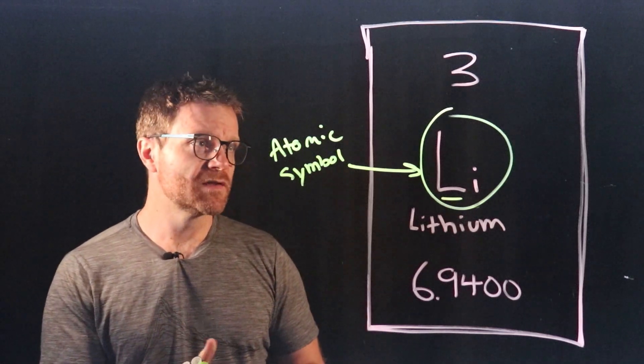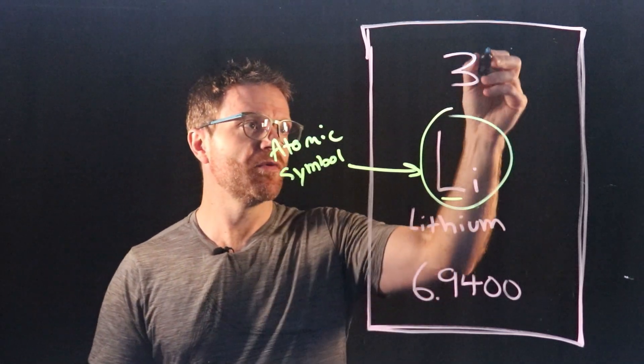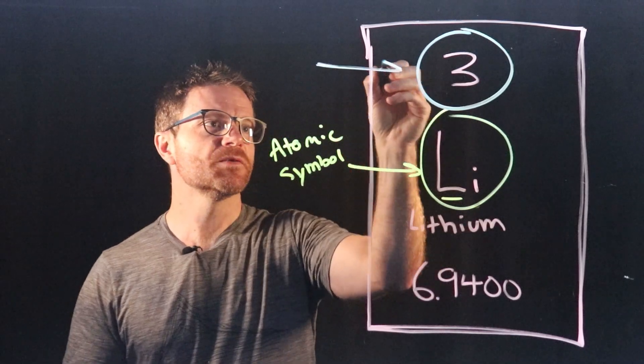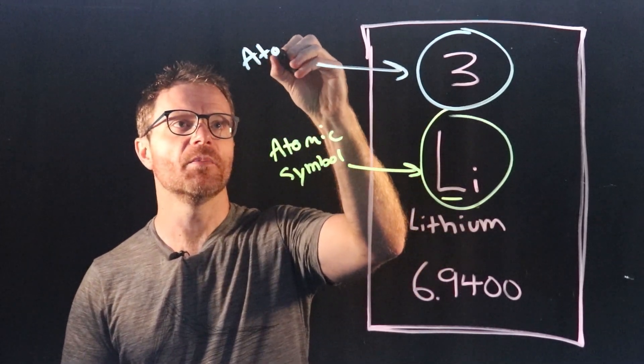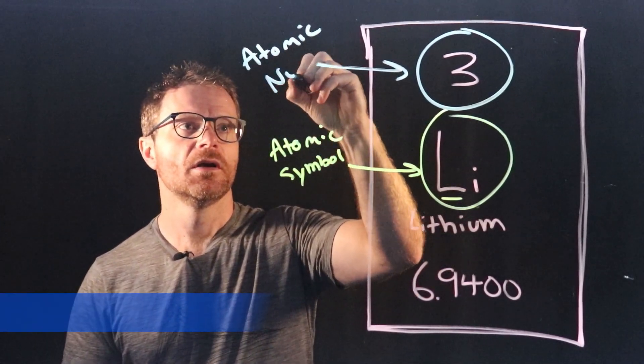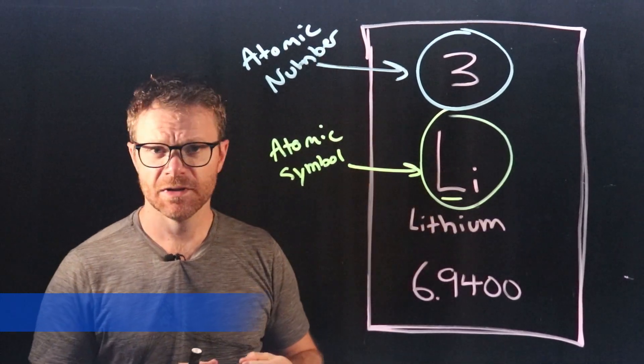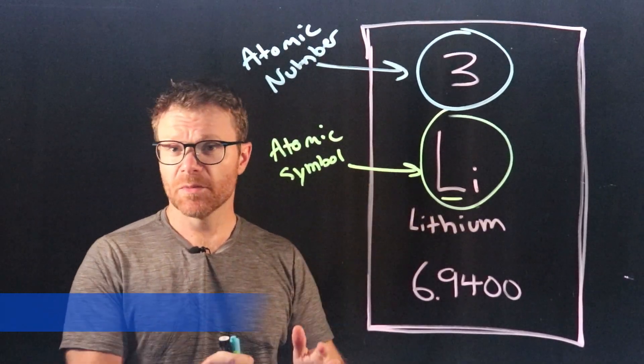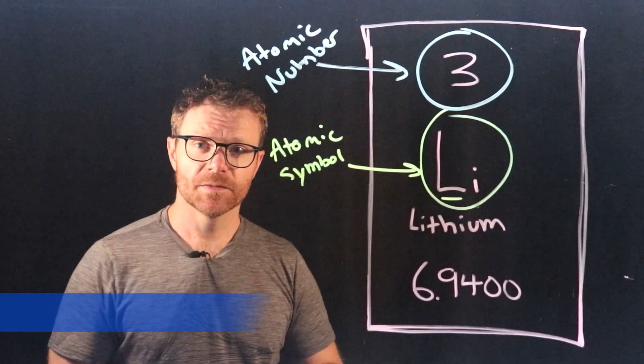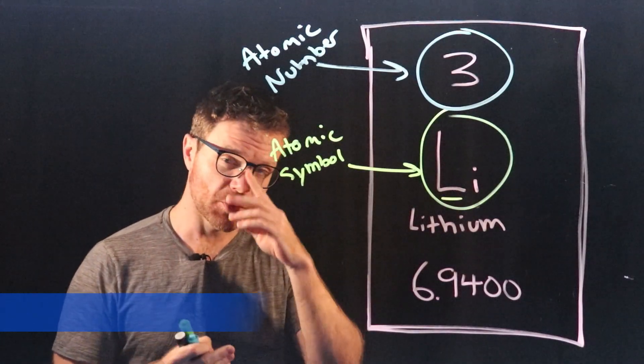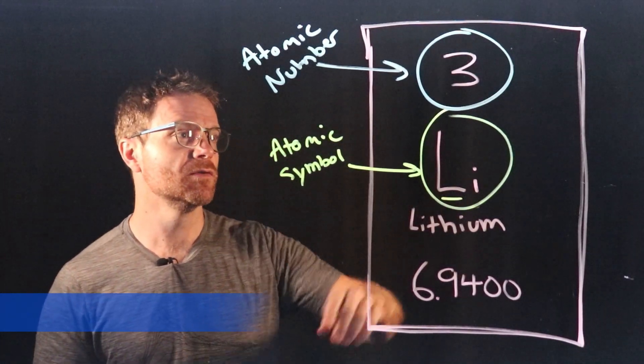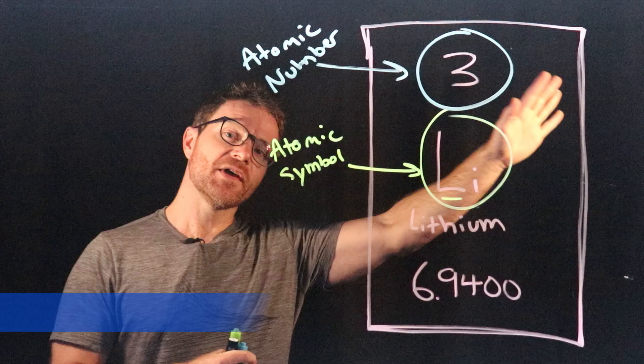The other really important piece of information here is up at the top, we have this whole number. That's what's known as the atomic number. The atomic number is really important. It basically is what determines one element from another. So hydrogen has atomic number one, helium has atomic number two, lithium has number three, and they go up from there.